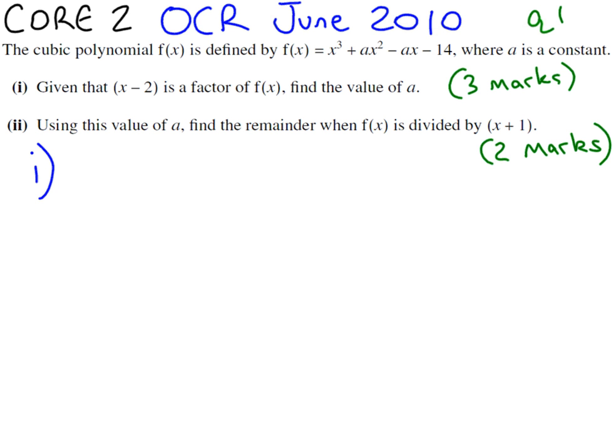Now you'll notice that we've got a's in our polynomial, which you might not be used to. This just means that a is representing a constant, and you can see that question (i) asks you to find the value of this constant. So don't be put off too much.